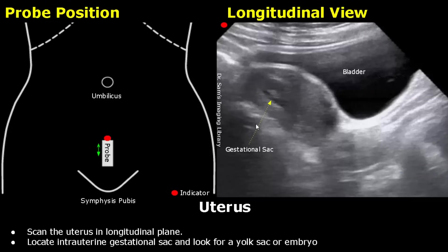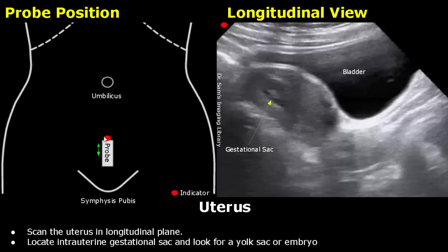We will start from early pregnancy. On the left side is a schematic diagram showing ultrasound probe position. These dotted lines are the right and left costal margins. This is the umbilicus. This white box is the ultrasound probe, and this red dot is the indicator or the orientation marker. This region is the inguinal region and this point is the symphysis pubis.